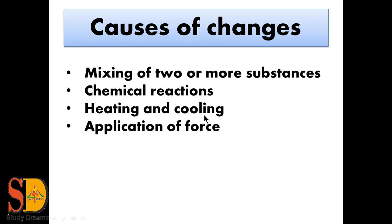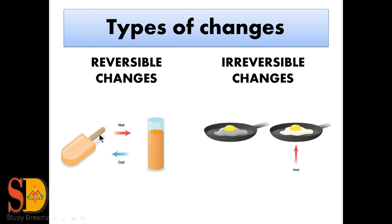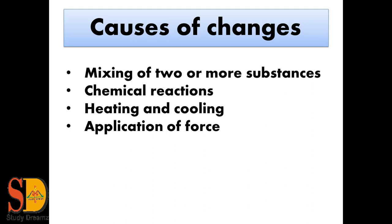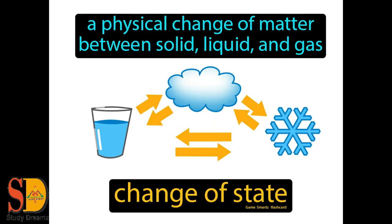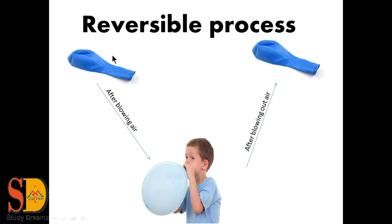Next we have heating and cooling. Heating and cooling bring about a change in the physical state of matter. For example, when we heat ice cream, the state of the ice cream gets changed, and when we cool it, the liquid changes back into solid form. Last, we have application of force. When we blow air into a balloon, the shape and size get changed — the blowing of air is applied as a force. So with the help of force, we get a change in the balloon. And after letting out the air, we get our original substance back. These are all the reasons due to which we see changes around us.